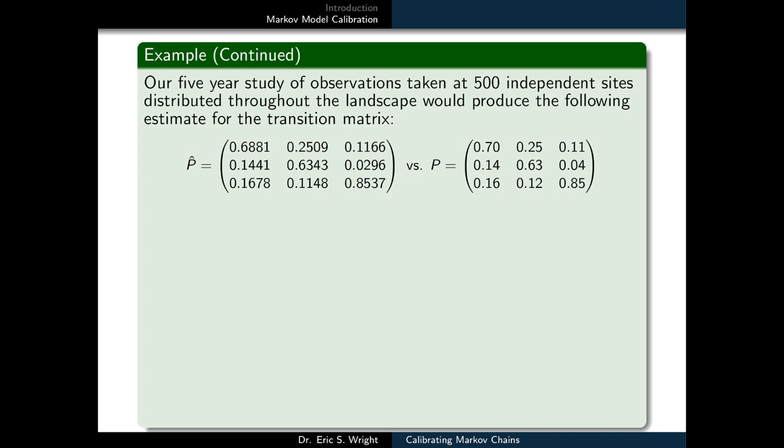P11 is .688, P12 is .2509, P13 is .1166 along the first row, and if we compare those to .7, .25, and .11, it's usually only the second or third decimal place where we start seeing divergence from the true values, and similar behavior appears along the other rows as well.